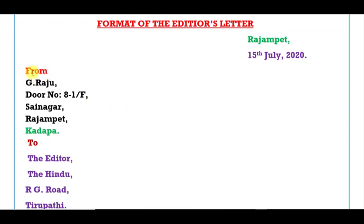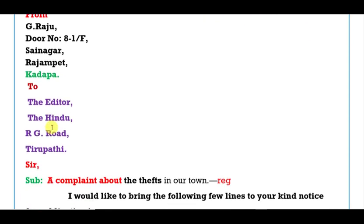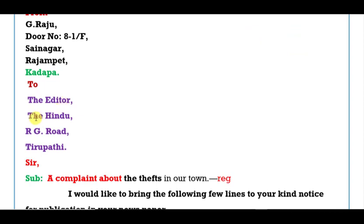The writer's address is written here. For example: G. Raju, Door Number 8/1F, Sainagar, Rajampet, Kadapa. Then the recipient's address: To the Editor, The Hindu, RG Road, Thirupati. This is a local newspaper.